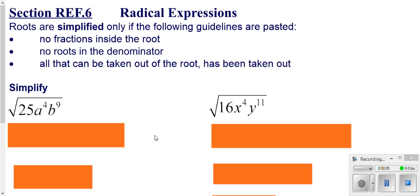We're going to continue to simplify roots — sometimes referred to as radicals — just like we did in the last lesson. However, these may not work out quite as nicely as they did before. For the most part, you're going to start out doing the same things, but keep in mind when you're simplifying roots, there are kind of three things you want to be aware of.